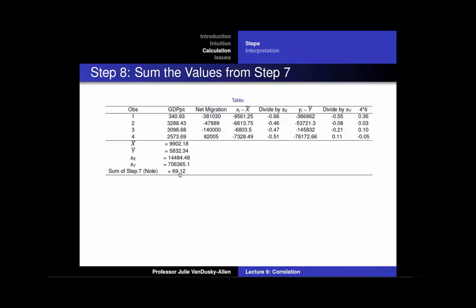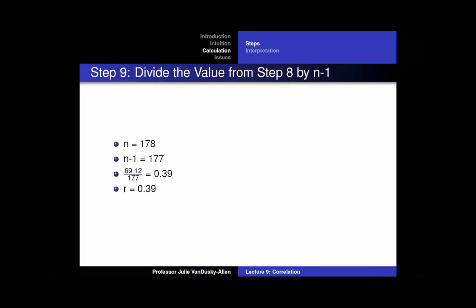When I did that, I got 69.12. Remember that I used 178 observations and I am only showing you 4 here, so this sum should not be the same as the sum of these 4 observations. Then you divide the value from step 8 by the number of observations minus 1, or 178 minus 1, which is 177. 69.12 divided by 177 equals 0.39. This gives you your correlation coefficient of 0.39.